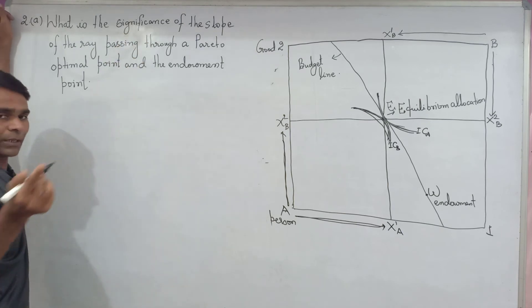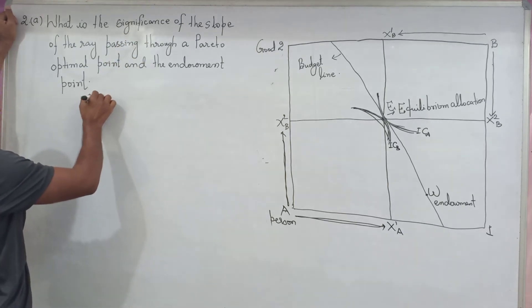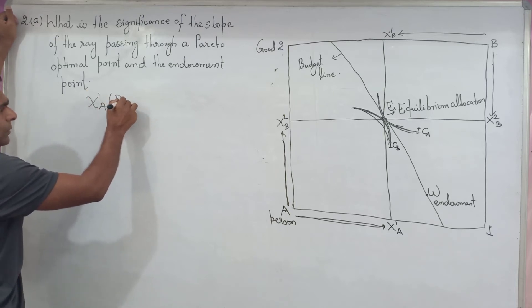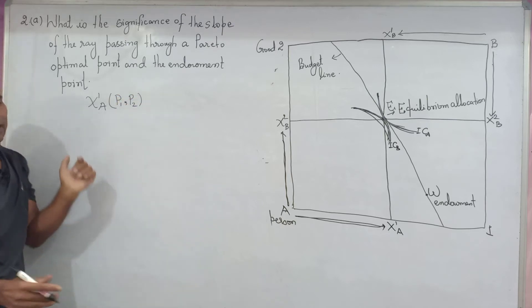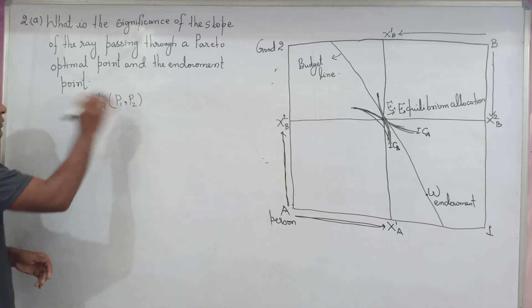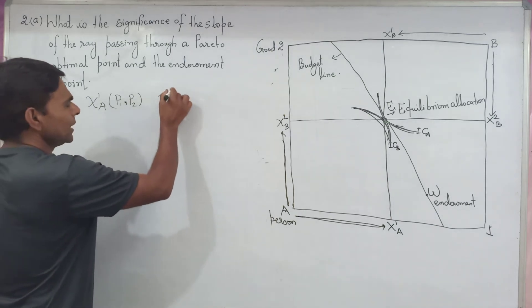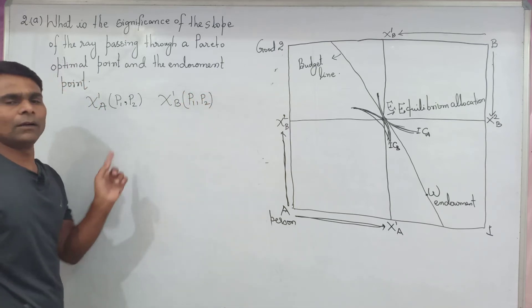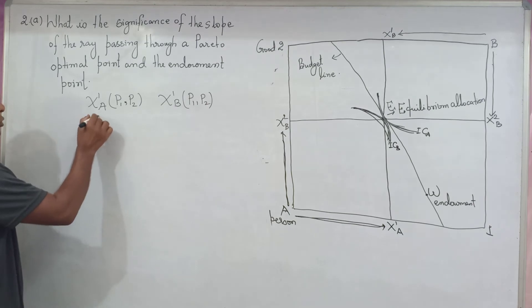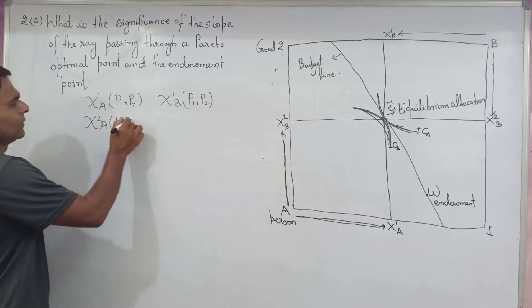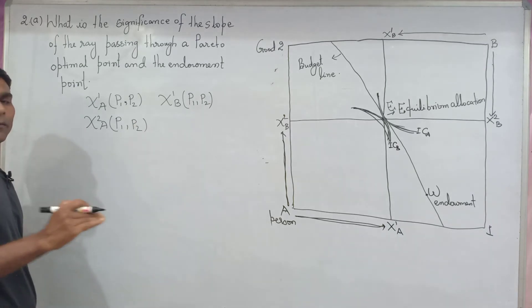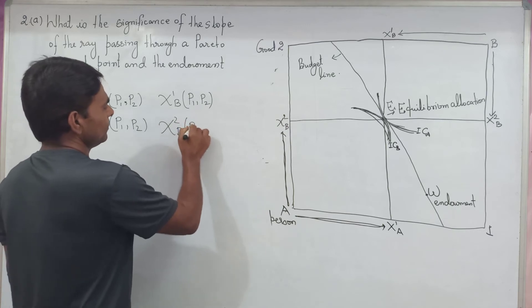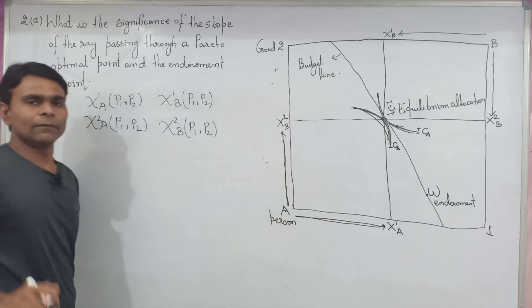An economy has 2 persons and goods 1 and goods 2. X1A, which is the function of P1 and P2, is person A's demand for goods 1. X1B, which is the function of P1 and P2, is person B's demand for goods 1. X2A, which is the function of P1 and P2, is person A's demand for goods 2. X2B, which is the function of P1 and P2, is person B's demand for goods 2.